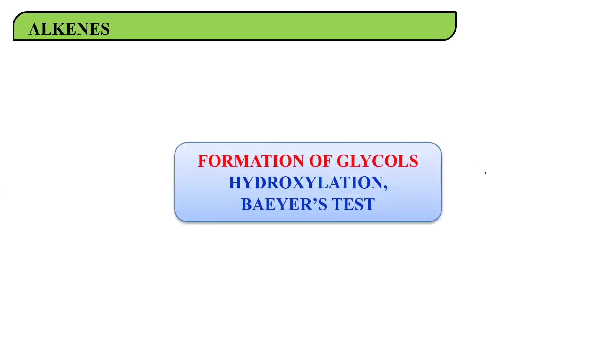Hello students, now we are going to discuss the next important reaction of an alkene. This is a distinguishing reaction — you can use it to tell whether a given compound is saturated or unsaturated. We are going to form an important class of compounds called glycols, also referred to as diols. This reaction is also called hydroxylation or Baeyer's test.